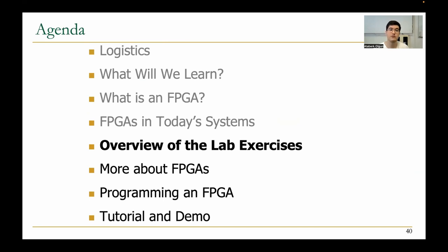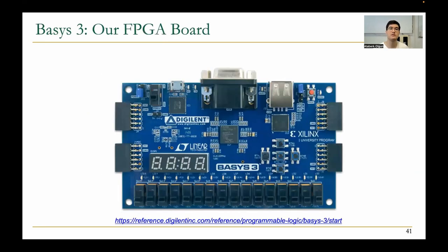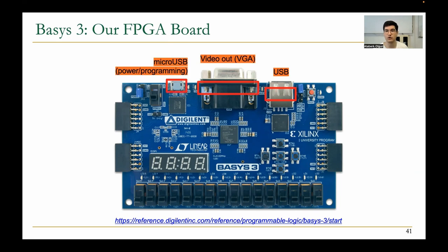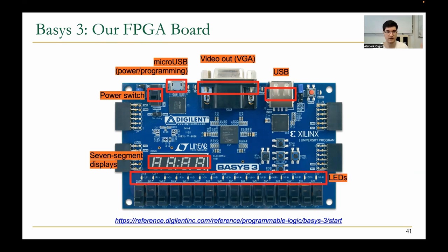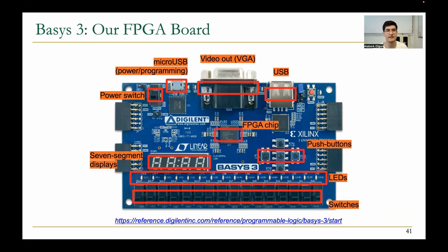We'll continue with an overview of the lab exercises. This is the board you're going to use in the labs. It has many components: a USB port, a video output, micro USB for programming the board, a power switch, a seven-segment display that you will use in some labs to display numbers, some LEDs that light up when you turn certain signals on, some switches, some push buttons for input, and the FPGA chip.